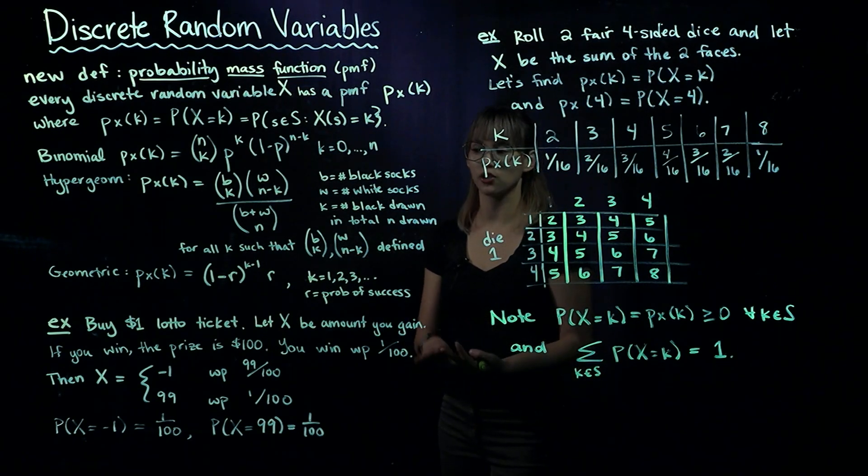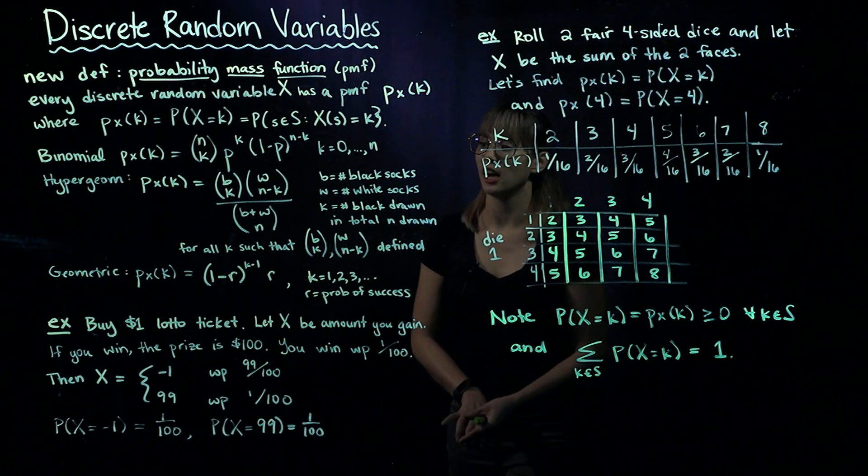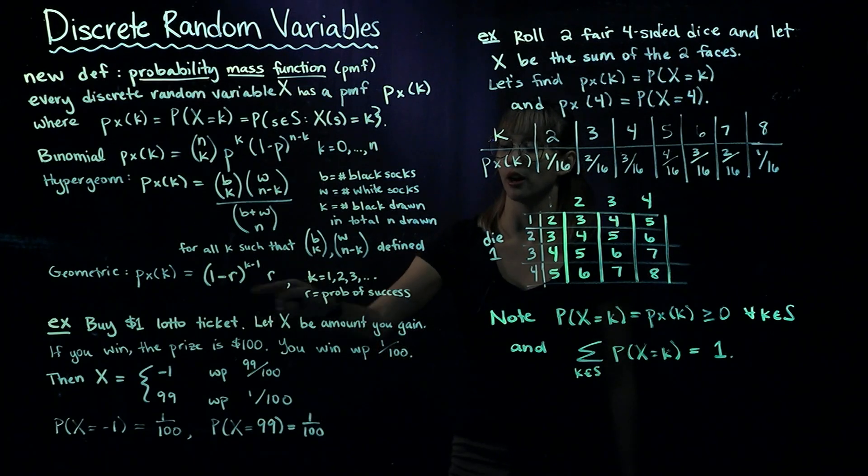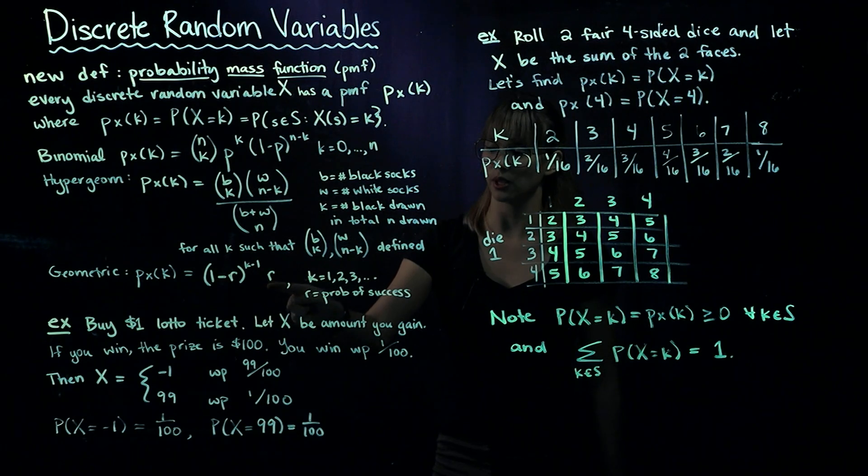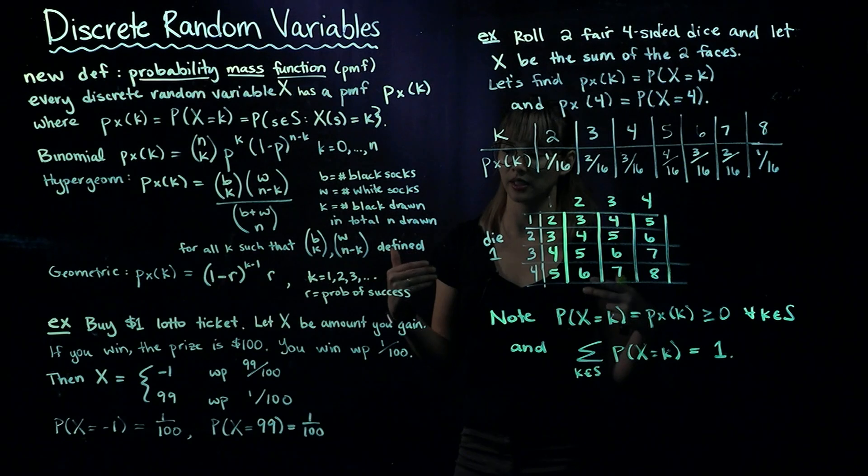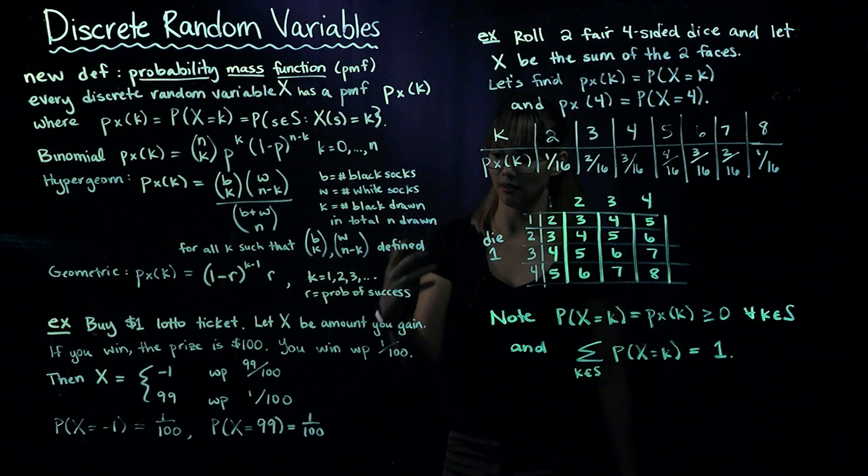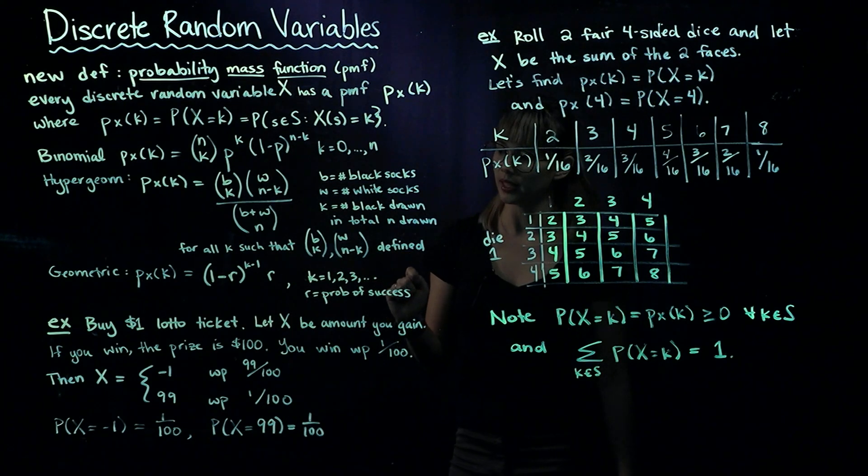Finally, the geometric distribution from the last video has PMF: (1 minus R) to the K minus 1 times R, where R is the probability of success. Geometric counts how many times you try before success occurs, so it always ends with success: probability of success times probability of failure to the K minus 1.